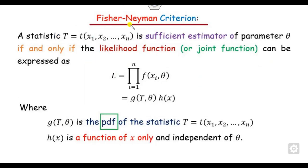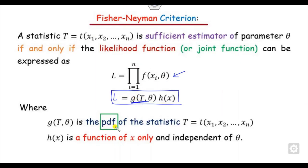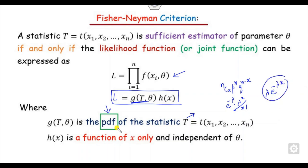In the Fisher-Newman criteria, we again start with L and try to reach the same form, but the key difference is the property of g. In the factorization theorem, g is any function dependent on both theta and x. But here, g must be the PDF of the statistic T. So if T follows a binomial distribution, g is the PDF of the binomial. If T follows a Poisson distribution, g is the PMF of the Poisson. Similarly for the exponential distribution and so on.